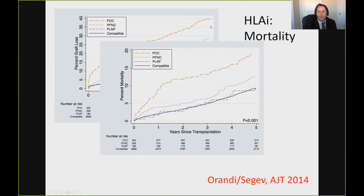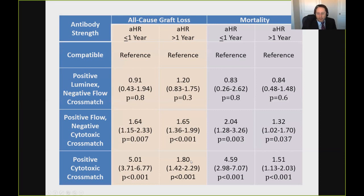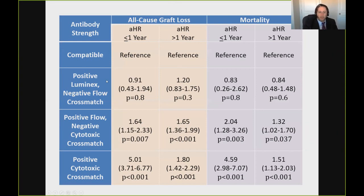We can further quantify this from a paper recently published in AJT. The risk in the first year and beyond the first year is shown for graft loss and mortality. A positive Luminex with a negative flow crossmatch is very safe to do with immune modulation. For those with a positive flow but negative cytotoxic crossmatch, the risk is not extremely high. For those with a positive cytotoxic crossmatch, in the first year the risk is about five times higher, and then drops substantially but remains always present, meaning antibodies are always still threatening the allograft.